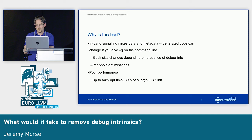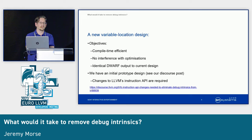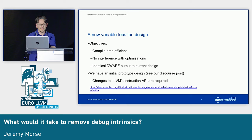What would a new variable location design look like? Well, first of all it would be efficient. It would not stuff irrelevant metadata into the middle of LLVM IR's data structures, and by doing that it would not interfere with optimization decisions. But there's a very high level objective: it should produce the same DWARF and the same binaries as outputs in the original or new representation. Because we're only changing how the information is stored, it absolutely shouldn't change what it means. So identical binaries is a definite requirement.